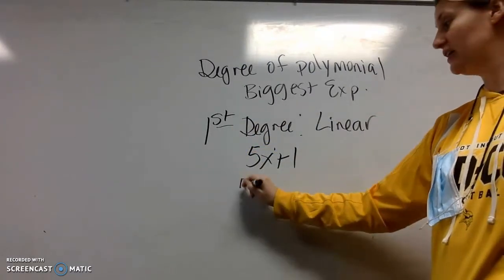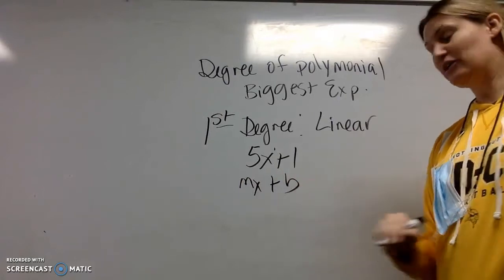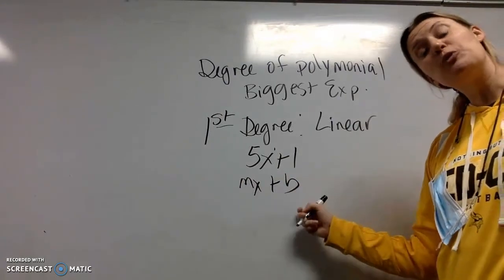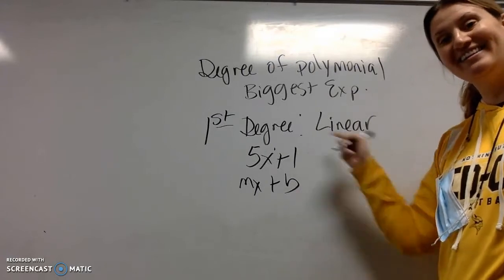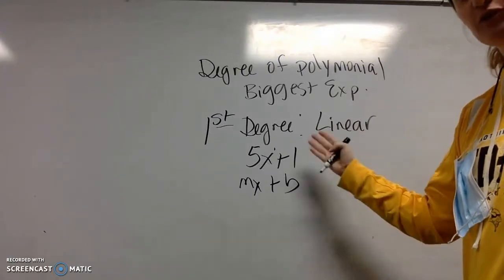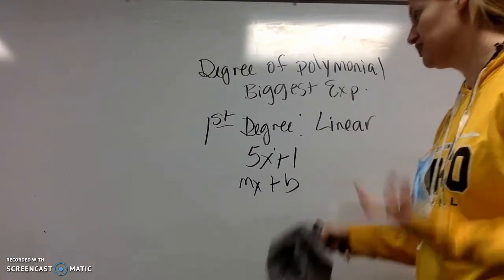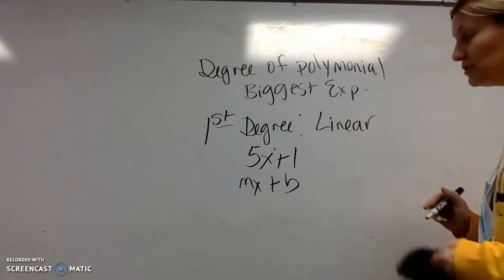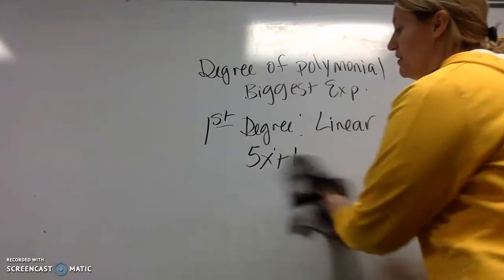If you look, that looks a lot like mx plus b, which we know is a linear equation. There is a direct correlation. They go together. So it is linear because it's a first degree and also because when you graph it, you get a line.